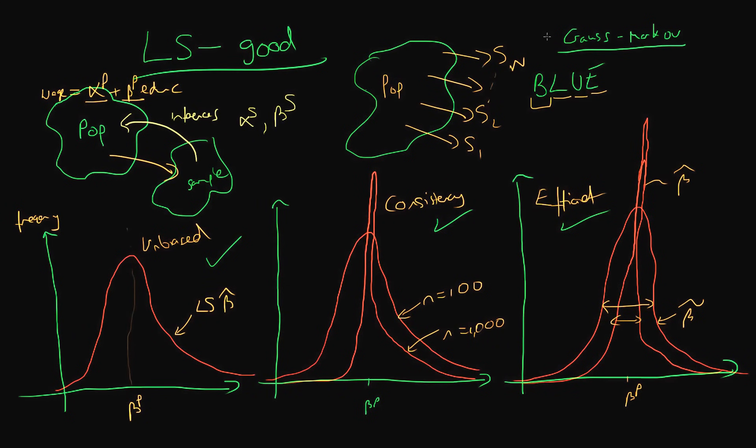So under these assumptions, the Gauss-Markov assumptions, least squares estimators are the best linear unbiased estimators. The best means that there are no other unbiased estimators which are more efficient than least squared estimators. And also they are consistent even though it's not mentioned in this mnemonic here.